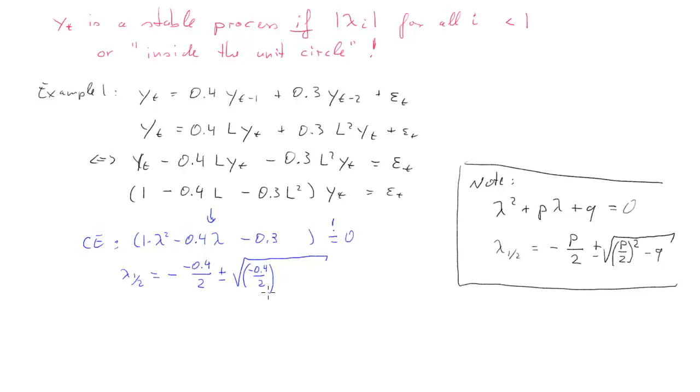and that needs to be squared, and then we subtract the value for q in our little rule, and that is negative 0.3. So that's negative negative 0.3. And now we can just do a little bit of algebra, and we'll find that is 0.2 plus minus square root of 0.34, and that will deliver the following solutions,